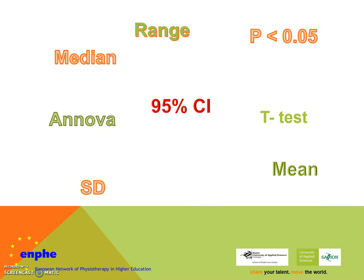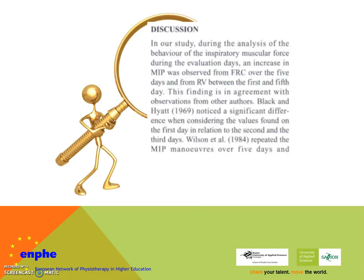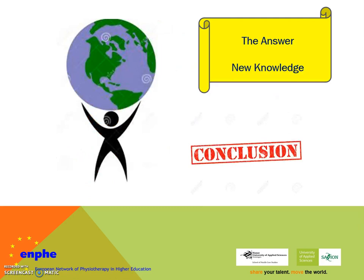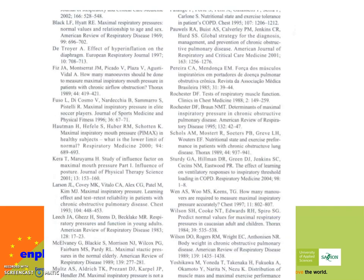If you want to know more about the statistics, you will have to watch another clip. In the discussion, the authors tell you about their interpretation of the results — it's a critical view of the study regarding the research process and outcomes. You can also find a comparison of the results with other studies. In the conclusion, you will find the answer to the research question and what new knowledge has been added. Finally, the references are quite useful — you can find all kinds of related articles that were used to write this article.